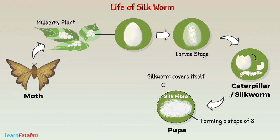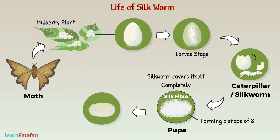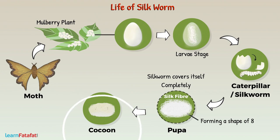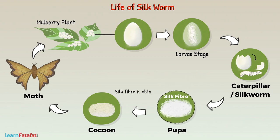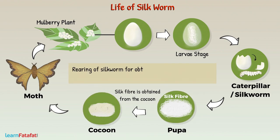The silkworm covers itself completely and enters the next stage of its life cycle called pupa. The covering so formed is called a cocoon. Inside the cocoon, the pupa grows and becomes a moth. The silk fiber is obtained from the cocoon of the silkworm. The rearing of silkworms for obtaining cocoons made of silk fibers is called sericulture.